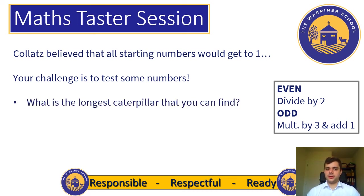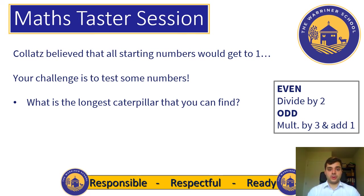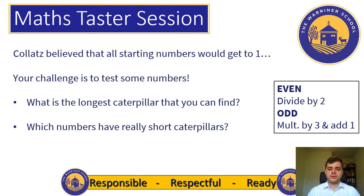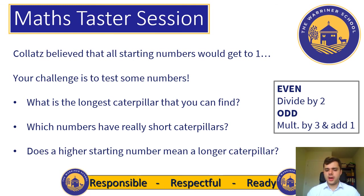Some things for you to think about: what's the longest caterpillar that you can find? First have a look at the numbers between 1 and 10 and see which one is the longest. Then start thinking about what other numbers you could try. I wouldn't go past 100 because there are some very long ones under 100 — see if you can find those. Also think about which numbers have really short caterpillars. You might find some quite big numbers that still reach 1 very quickly. A bigger starting number doesn't necessarily mean a longer caterpillar.